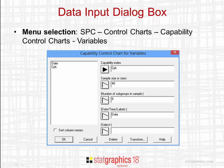If the capability indices are based upon subgroup data, put a number in the field labeled Number of Subgroups in Sample to indicate how many subgroups are associated with each value of the capability index. This can also be the name of a column if the number of subgroups differs from one date to the next.